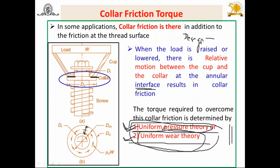Uniform wear theory is applicable after some period of time during running conditions, when wear of the collar or cup material occurs due to relative motion between the cup and the collar. The type of material used for collar and cup determines which part wears out.